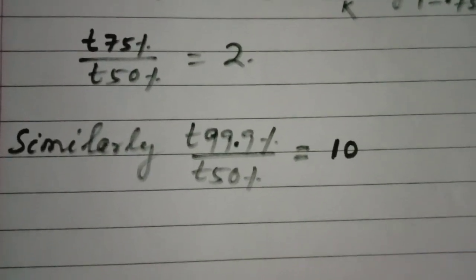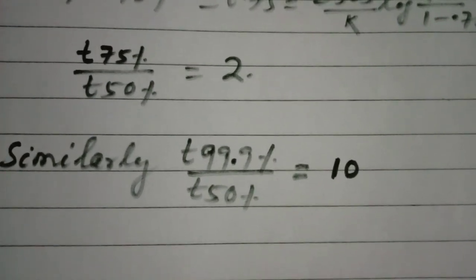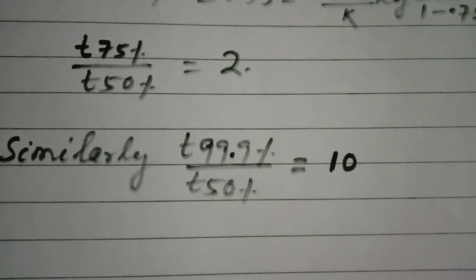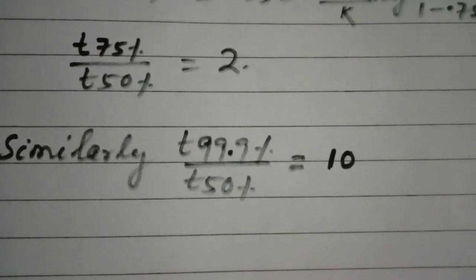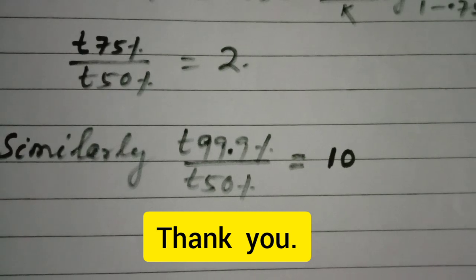Similarly, t99.9 percent by t50 percent is found to be 10. You have to calculate t50 percent by t25 percent. Thank you.